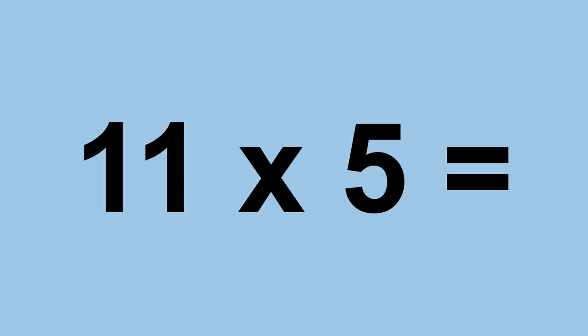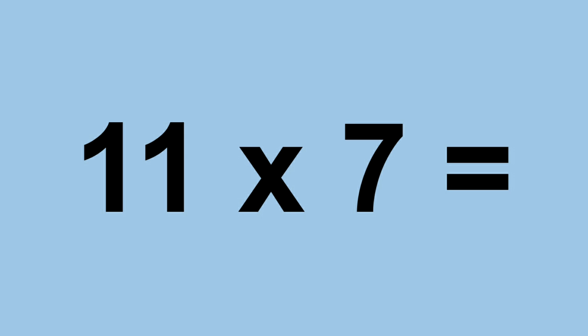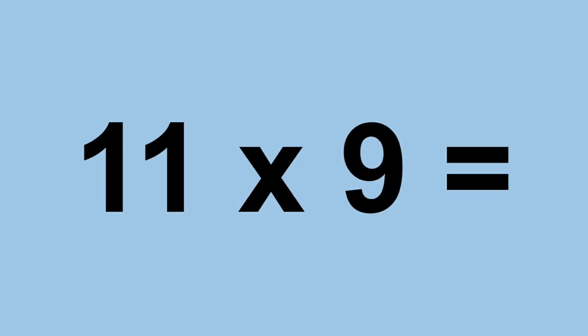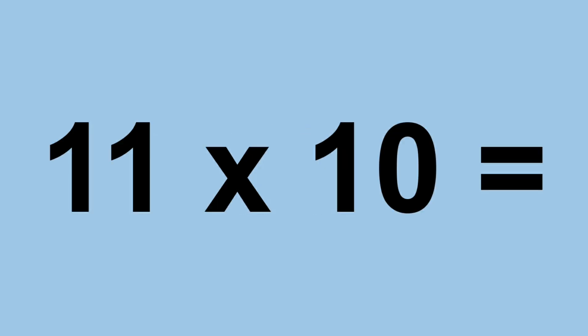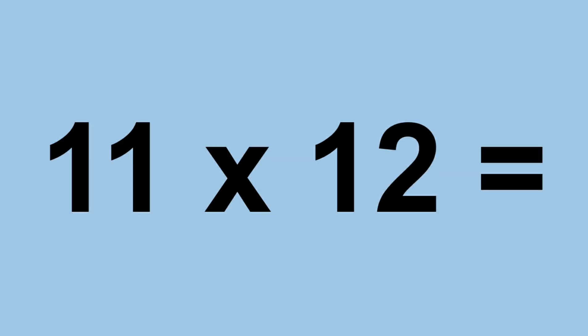Eleven times five equals fifty-five. Eleven times six equals sixty-six. Eleven times seven equals seventy-seven. Eleven times eight equals eighty-eight. Eleven times nine equals ninety-nine. Eleven times ten equals one hundred and ten. Eleven times eleven equals one hundred and twenty-one. Eleven times twelve equals one hundred and thirty-two.